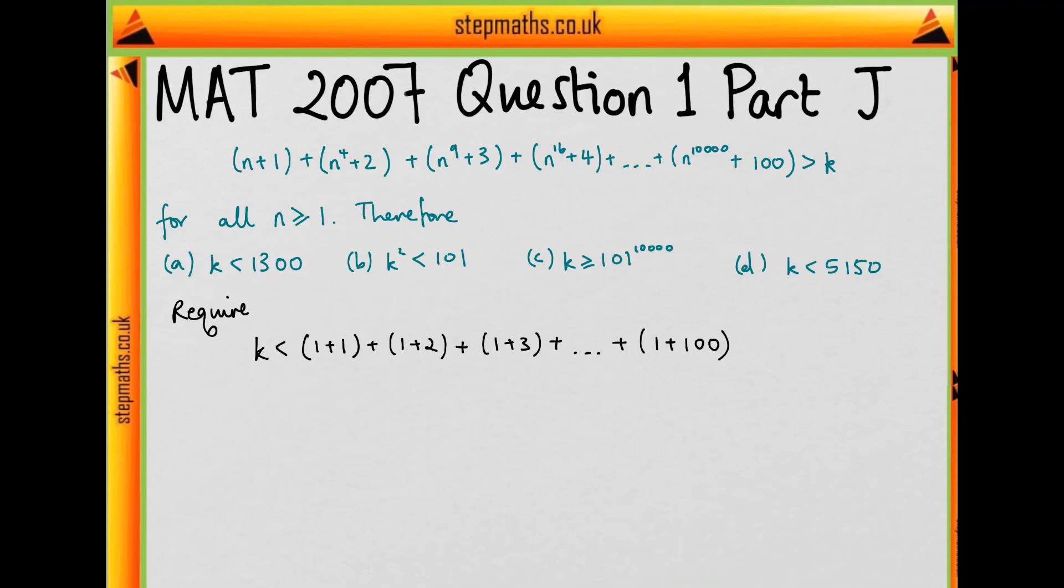And 1 raised to any power is still 1. So we see that we're going to need k to be less than 1 plus 1, plus 1 plus 2, plus 1 plus 3, and so on up to 1 plus 100.